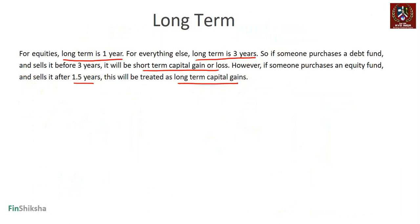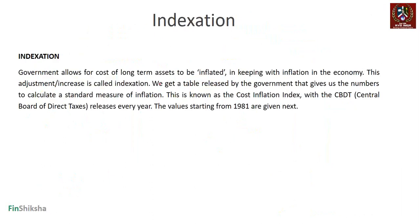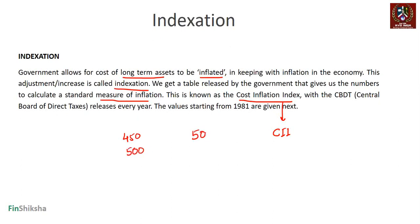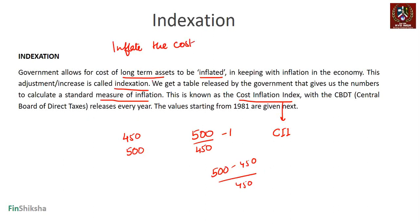Now let's understand indexation. The government allows the cost of long-term assets to be inflated in keeping with inflation in the economy — this adjustment is called indexation. We get a table released by the government called the Cost Inflation Index (CII), released by the Central Board of Direct Taxes every year. For example, if the CII in one year is 450 and the next year is 500, the inflation measure is (500 − 450) / 450.